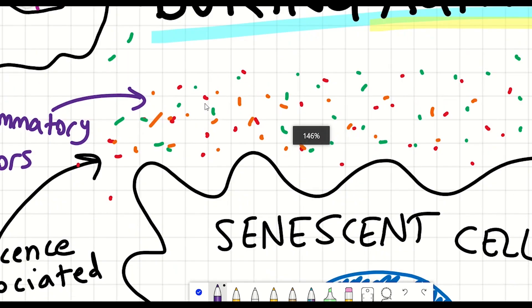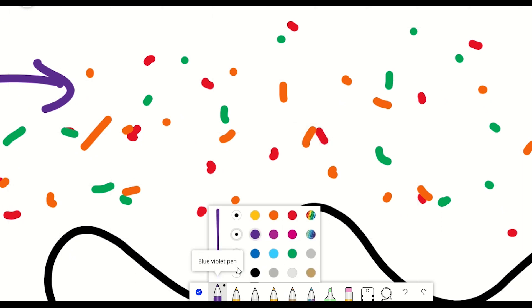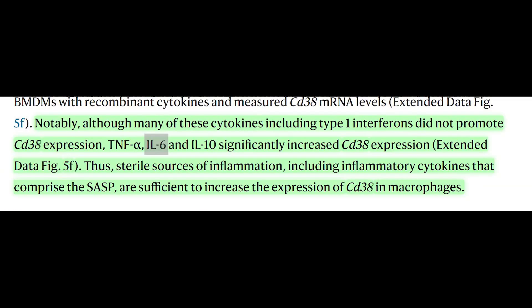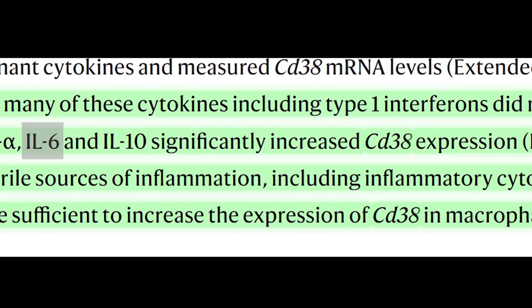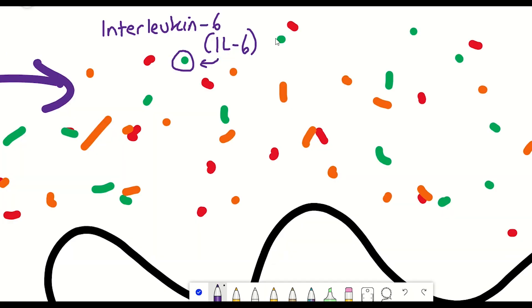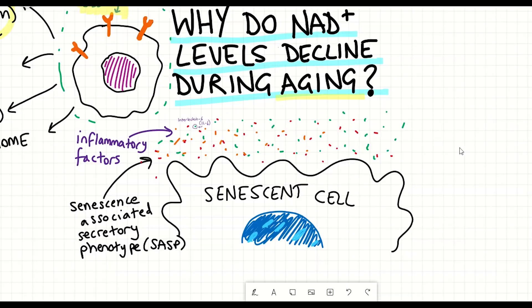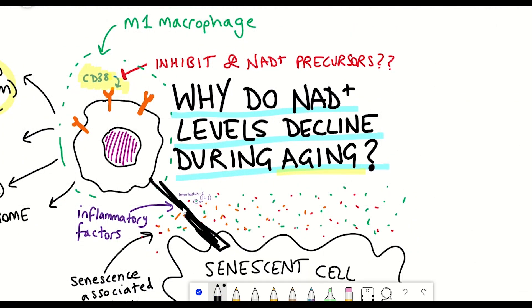As I said, these senescent cells have a secretory phenotype and one of these factors is the cytokine interleukin-6. The authors showed that interleukin-6 alone was sufficient to induce CD38 expression in macrophages. This made a connection between the SASP (the secretory phenotype) of the senescent cells and this activation of these M1-like macrophages expressing CD38.